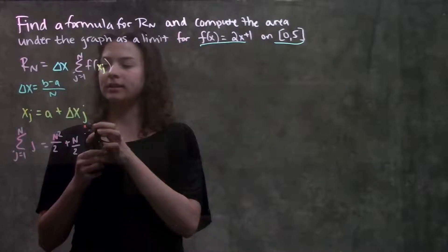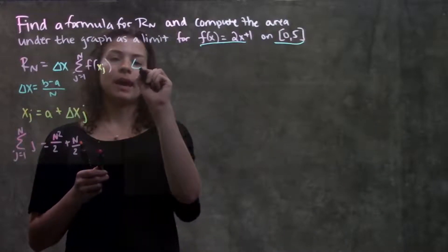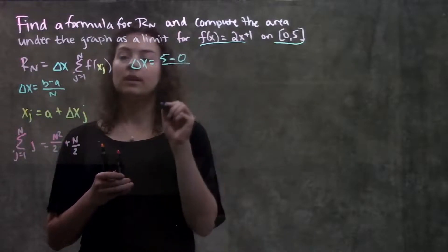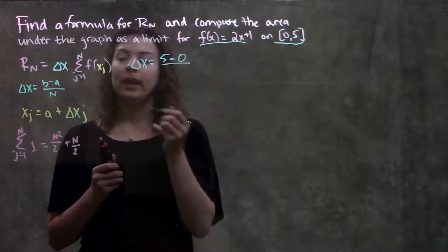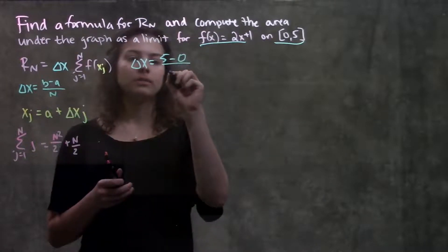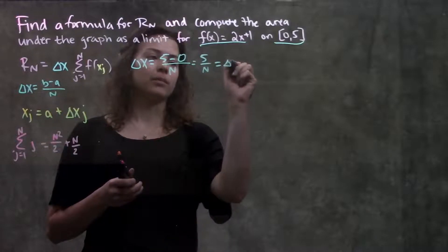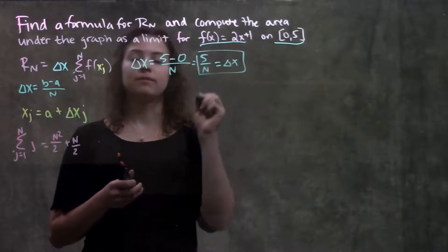So let's find our first part, our delta x. If you remember delta x is just always the difference in our interval, so 5 minus 0, divided by however many rectangles we want. In this case, they don't give us a number of rectangles because we're finding a general form, so we just leave n as our number. So our delta x becomes 5 over n.